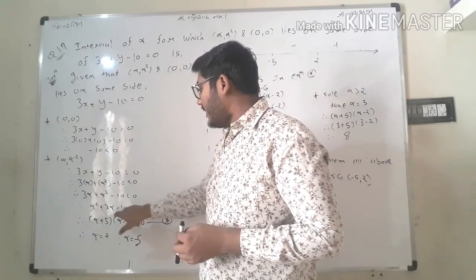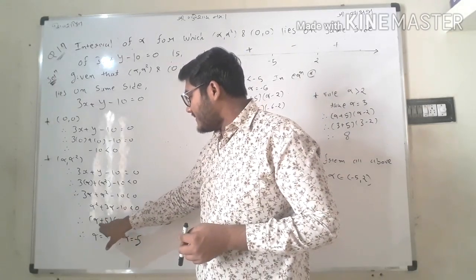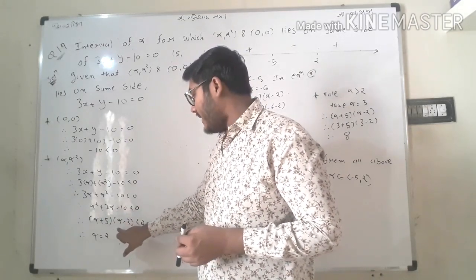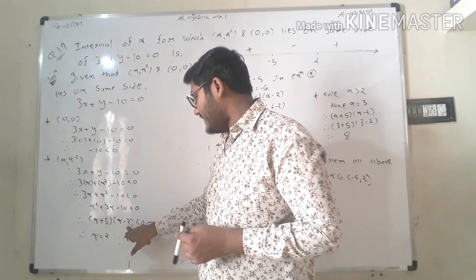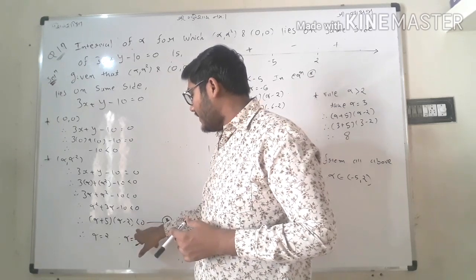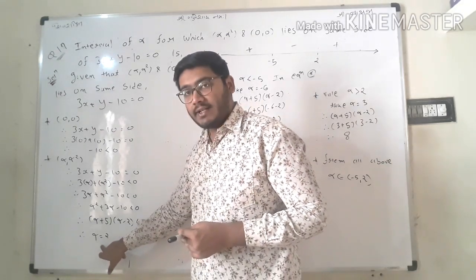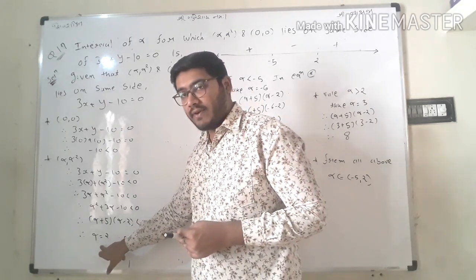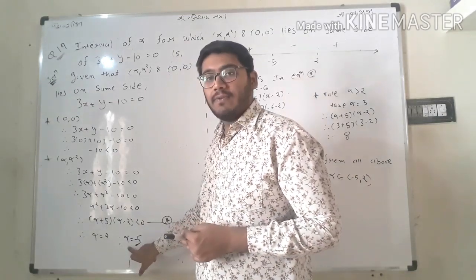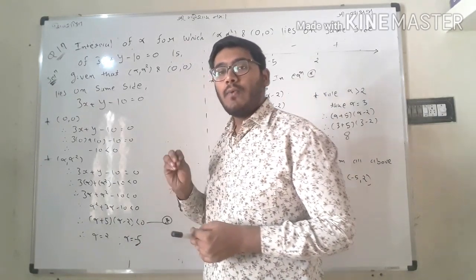Factoring the expression, we get (alpha + 5)(alpha minus 2) < 0. From this we get the roots: alpha = 2 and alpha = minus 5.